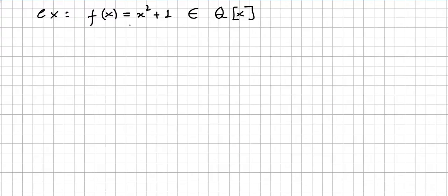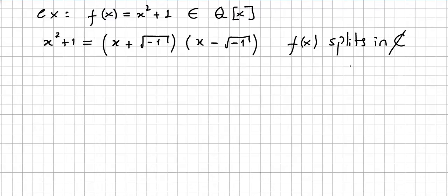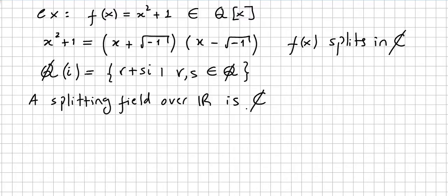Let us consider the polynomial f of x equals x squared plus 1, the same polynomial we have been using, in the ring of polynomials over the rationals. x squared plus 1 can be factored as linear factors as x plus i times x minus i. So it's obvious that f of x splits in the complex numbers. If you want to split it over the rationals, you can use the field of the form r plus s·i where r and s are in the rationals. A splitting field over the reals is the complex numbers.